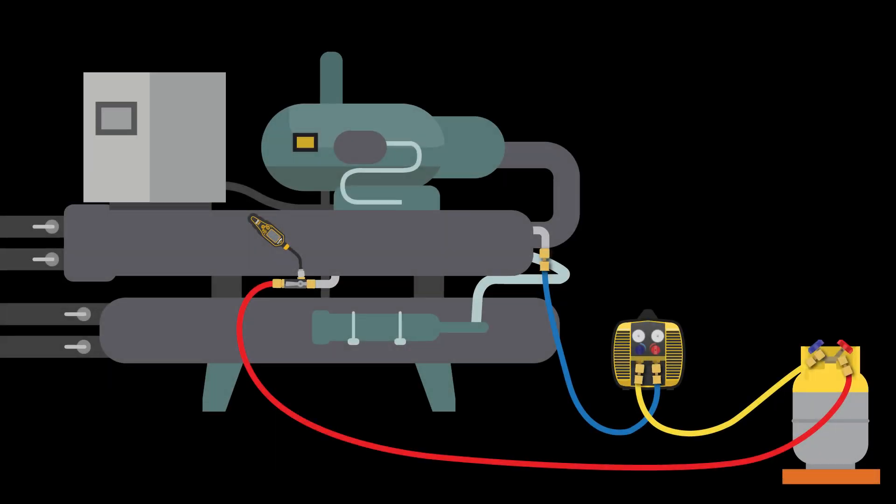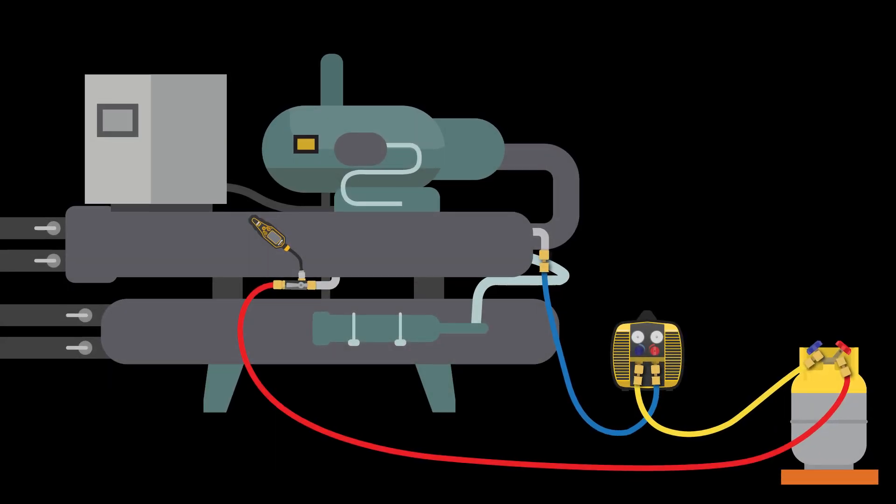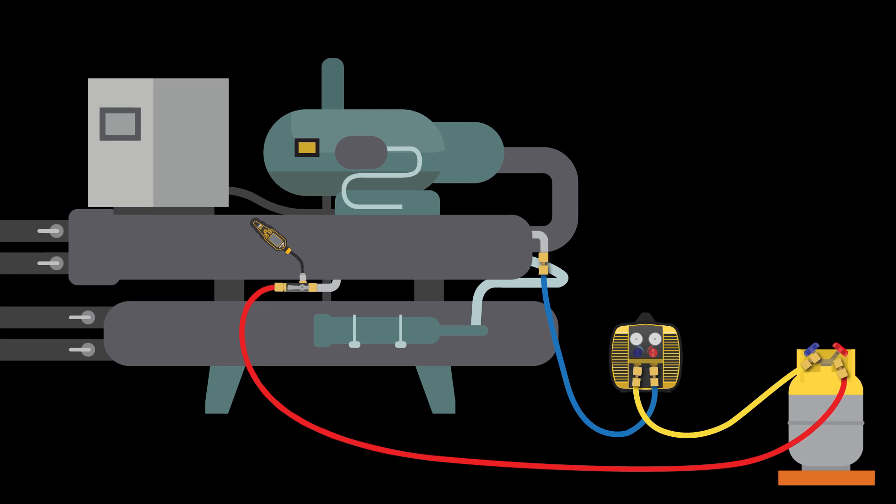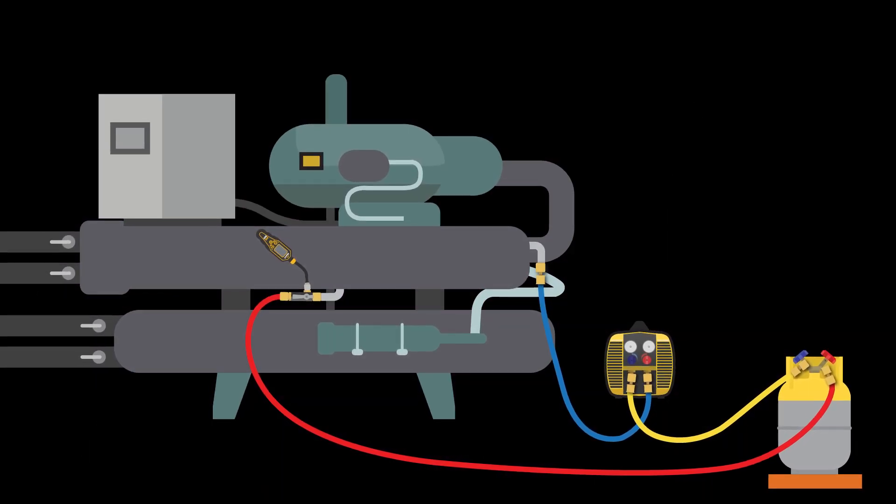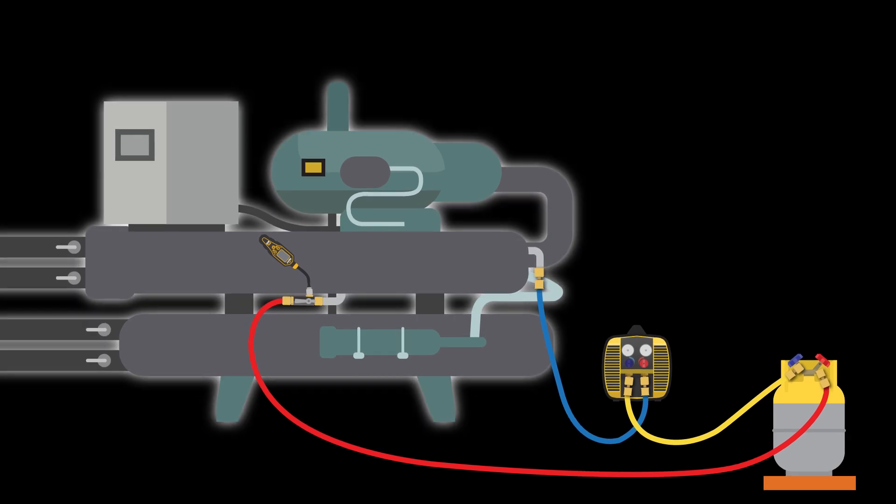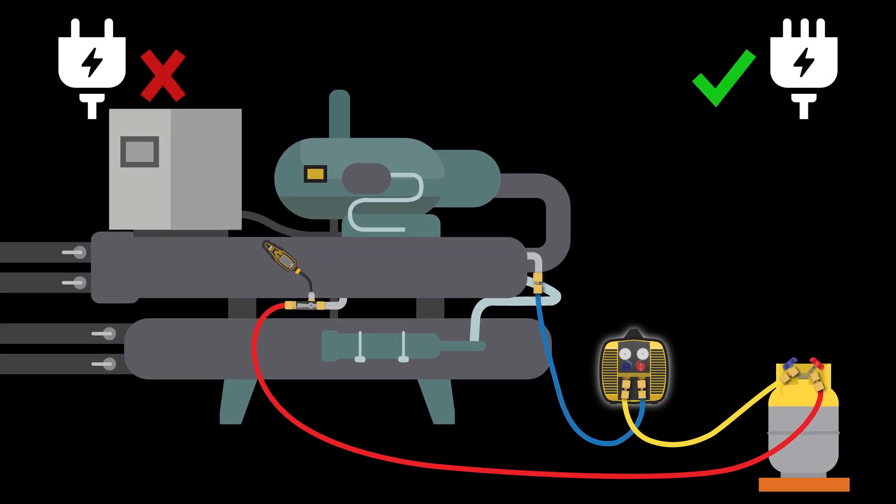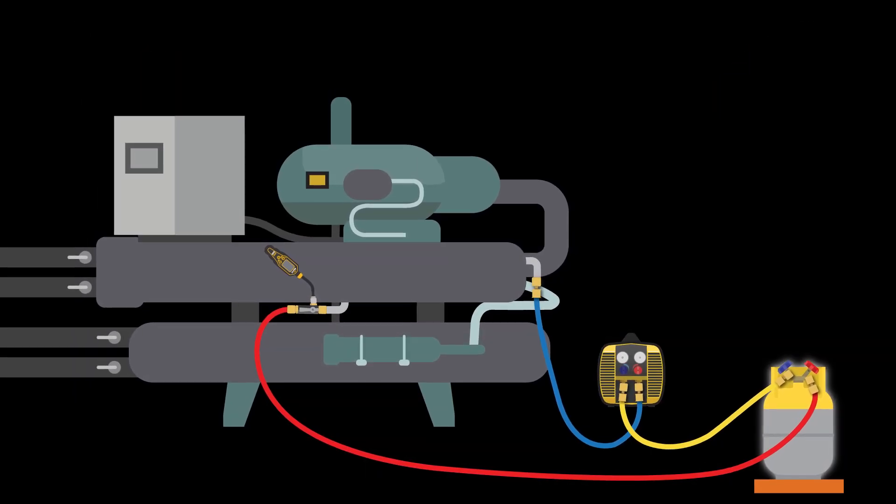Grounding your recovery setup is an often overlooked process. Ensuring each component in the setup is grounded properly is a must when it comes to static charge mitigation. This includes but is not limited to making sure the system, hoses, recovery machine, and even the recovery cylinder are properly grounded.